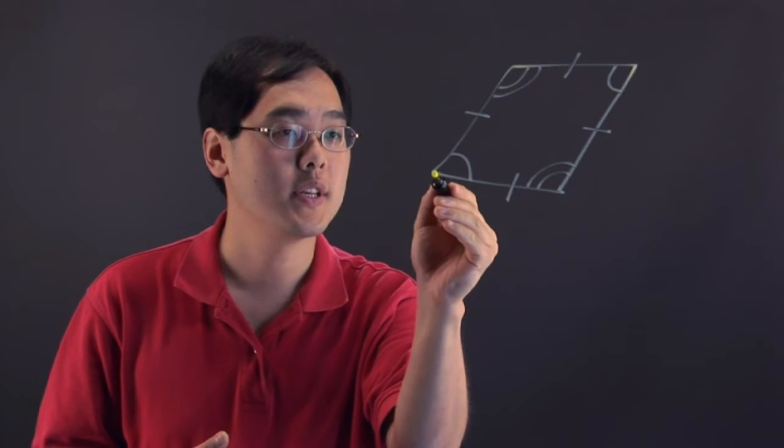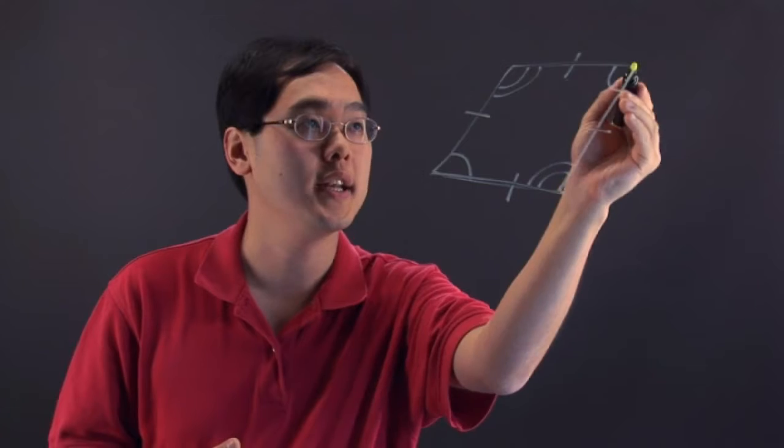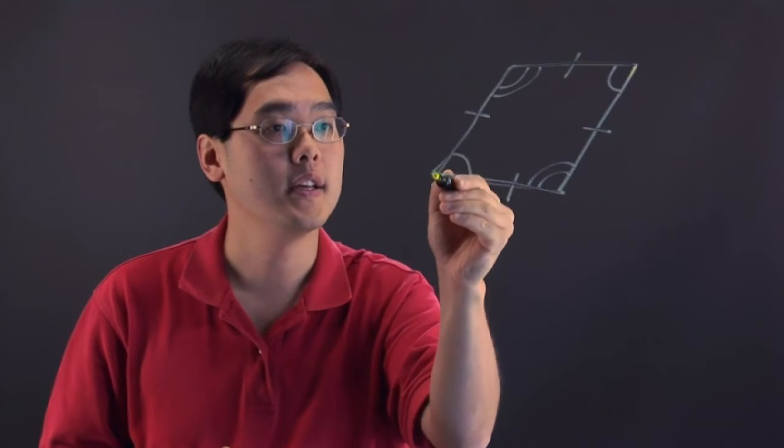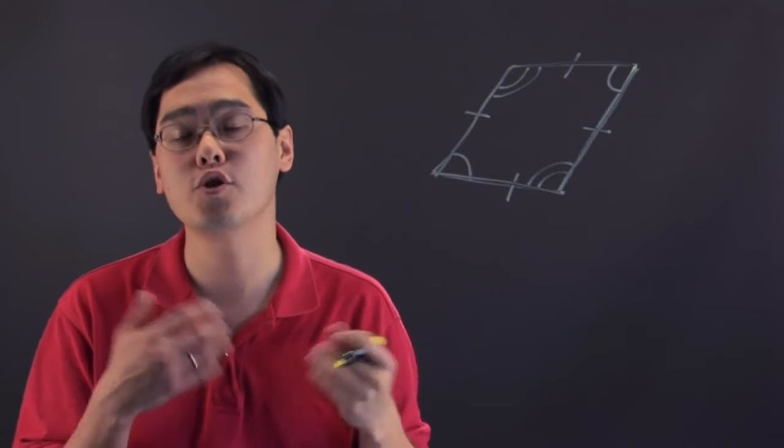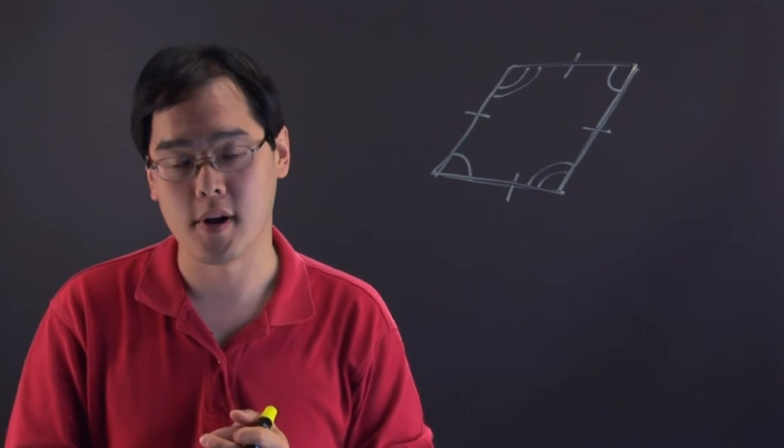Now if you look at a rhombus, this side is parallel to this side, and this side is parallel to this side. So it does fulfill the criteria of having two pairs, opposite pairs of parallel lines.